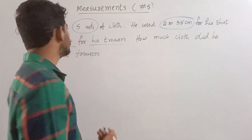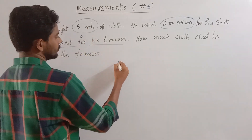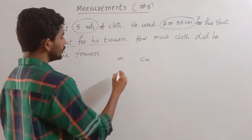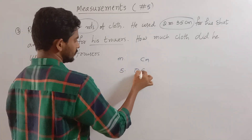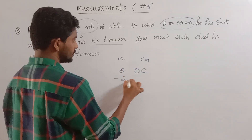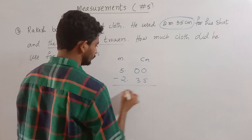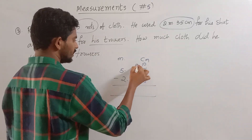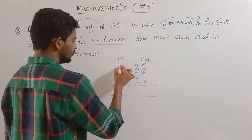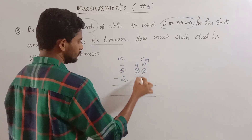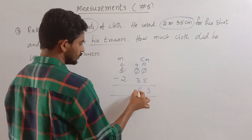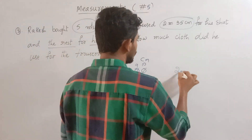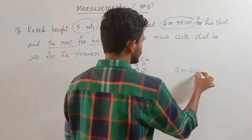5 meters and 0 centimeters minus 2 meters and 35 centimeters. We borrow: 10 minus 5 is 5, 9 minus 3 is 6, 4 minus 2 is 2. The remaining answer is 2 meters and 65 centimeters.